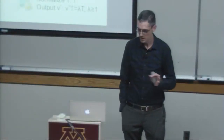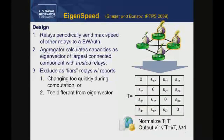There is another system designed to solve this problem called EigenSpeed, by Snader and Borisov in 2009, with the full version in Snader's thesis. In EigenSpeed, the relays measure each other instead of having a third party measure. The relays keep track of how fast they observe traffic coming from peer relays and periodically send those measurements to a bandwidth authority, which aggregates them to estimate all relay capacities.